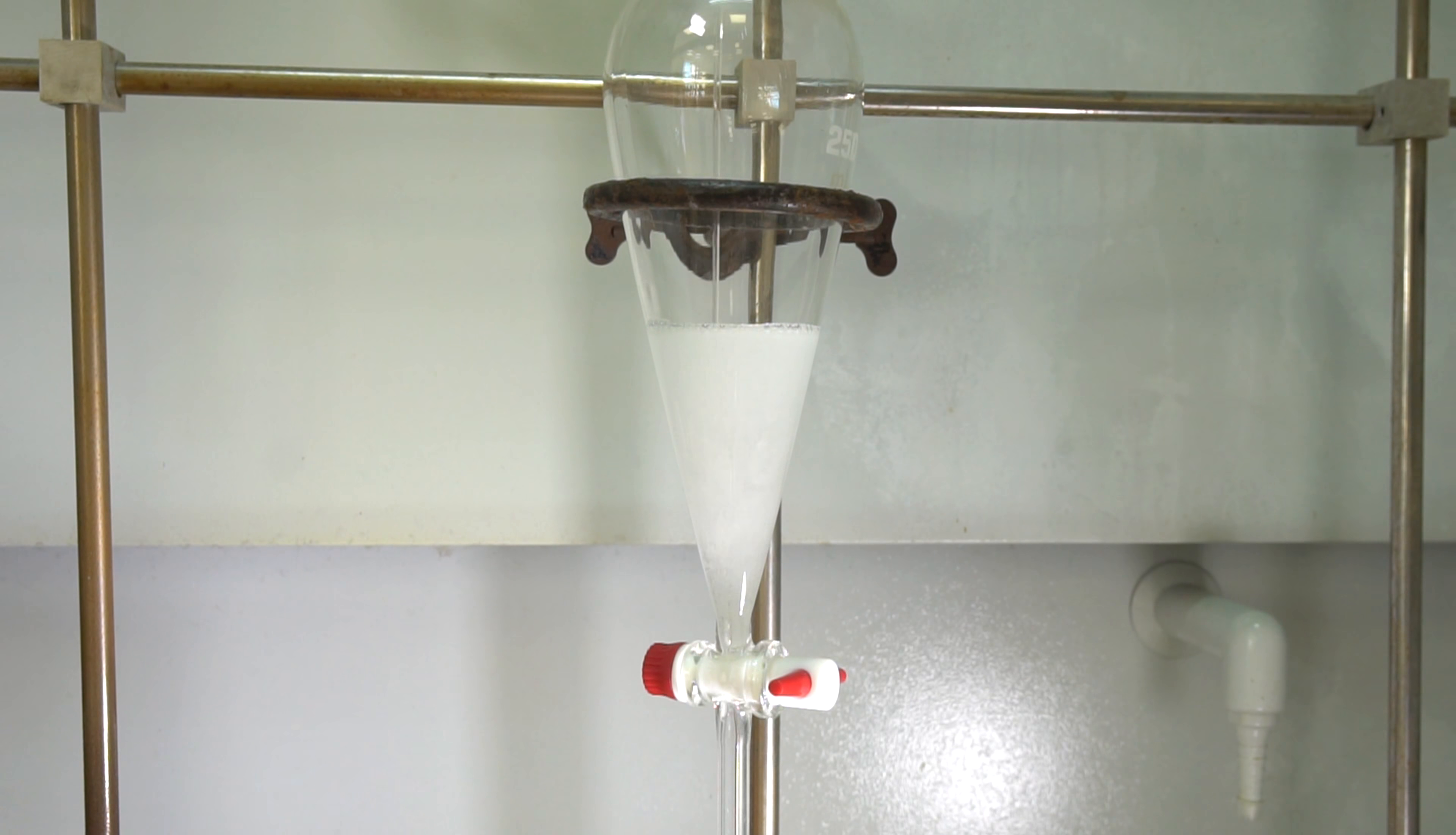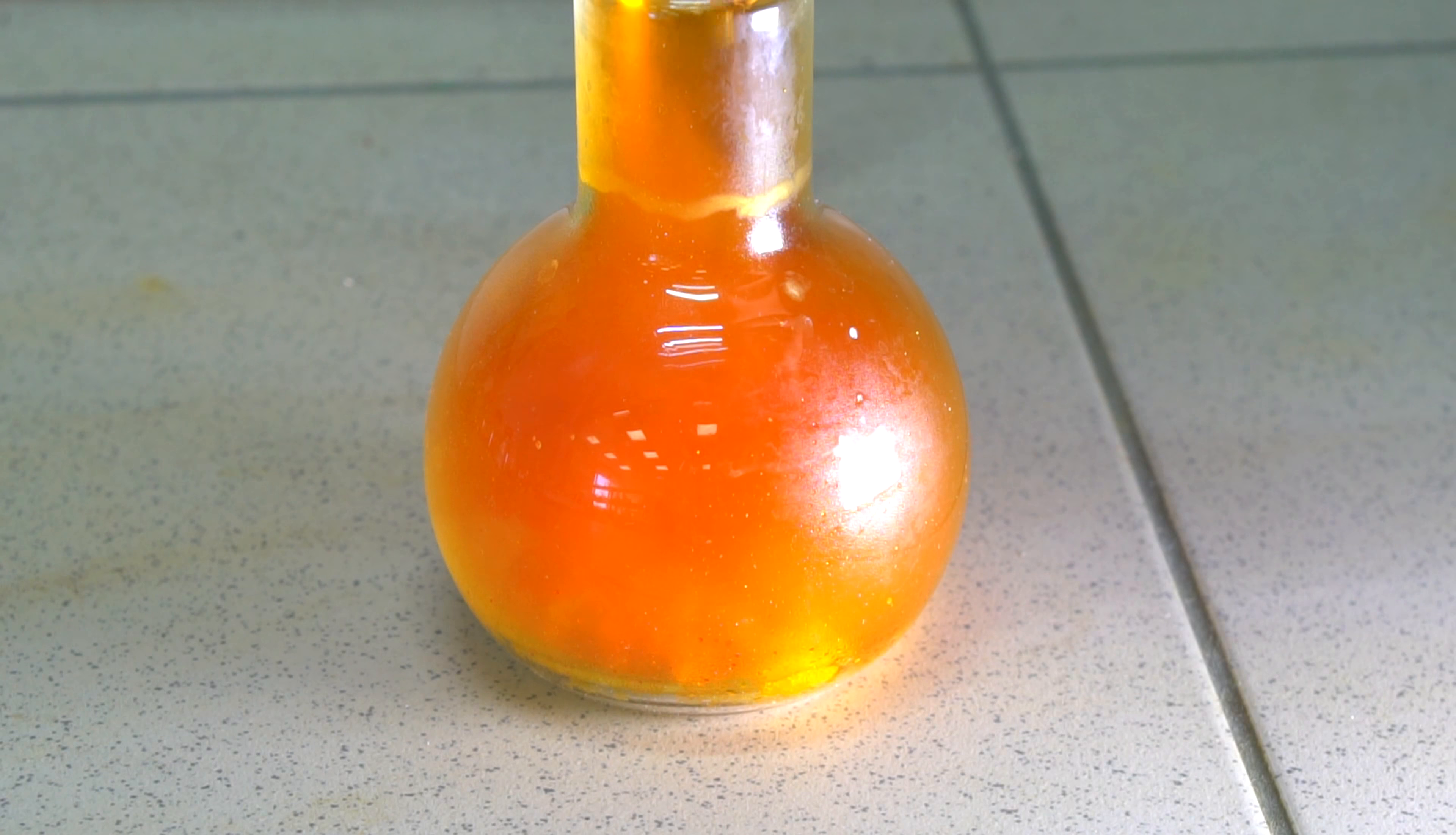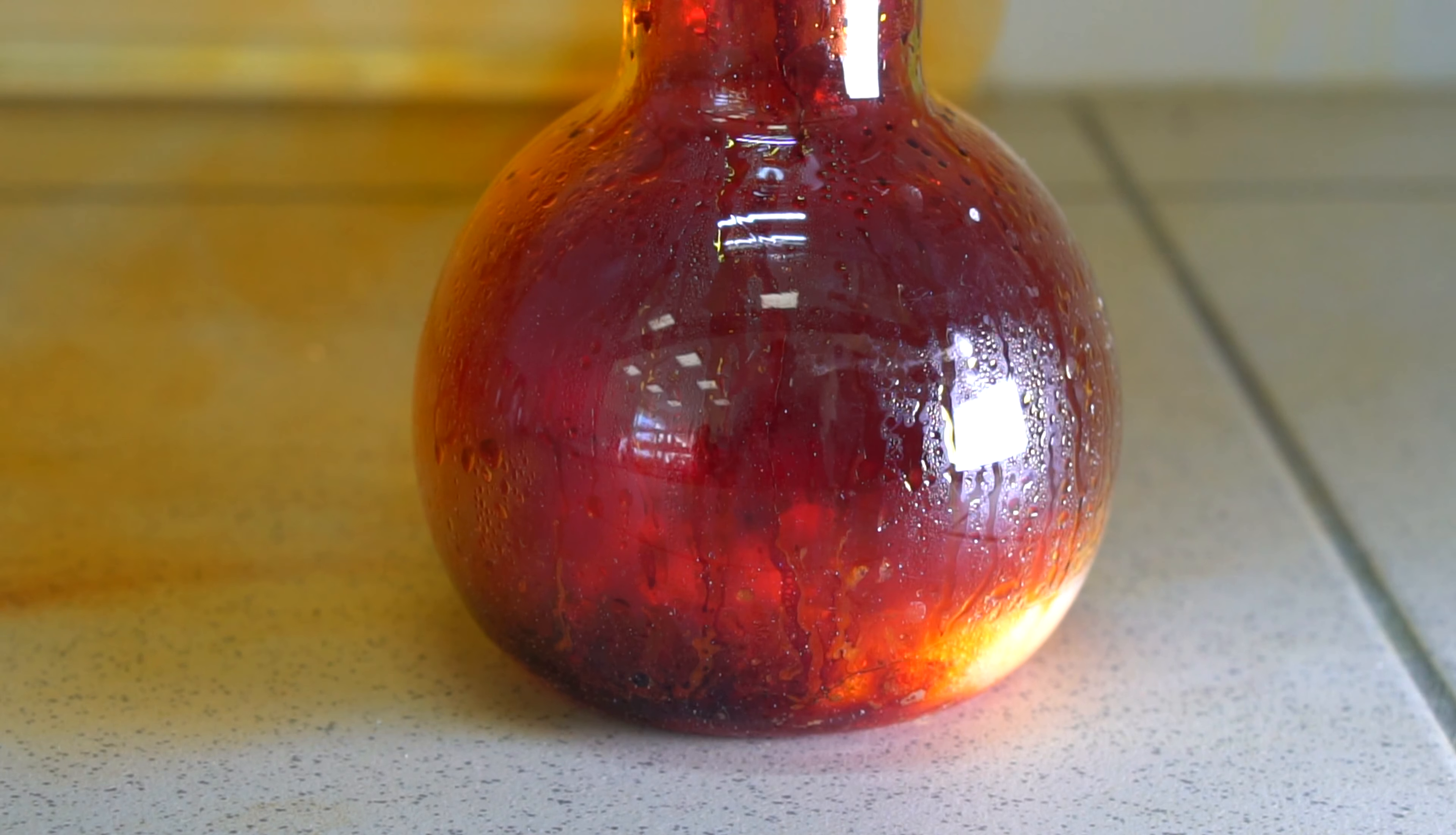After cooling, I pour this extreme mixture into a dropping funnel to better control speed of the reaction. Upon reaction of potassium bromide with a drop of this mixture, the flask fills with bromine vapors, which boil because of the high temperature this reaction produces. Upon adding more liquid, bromine starts escaping from the flask, filling the fume hood with smelly vapors.